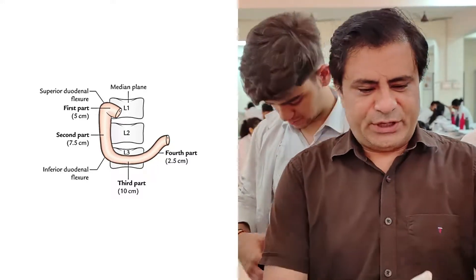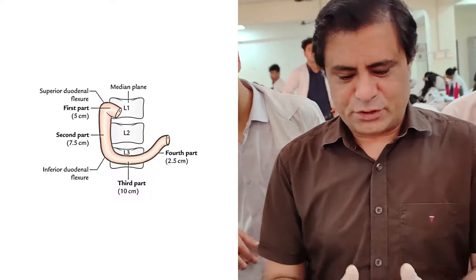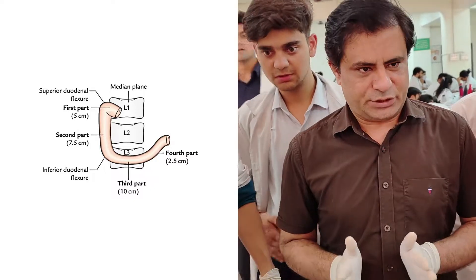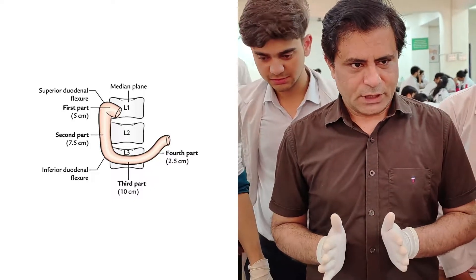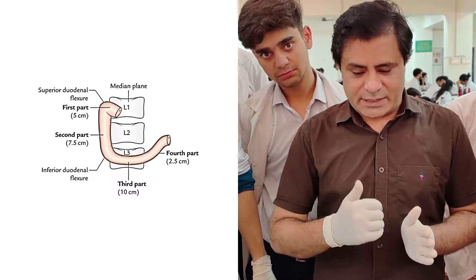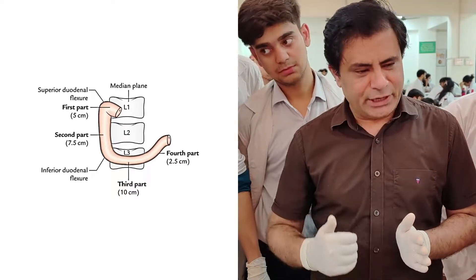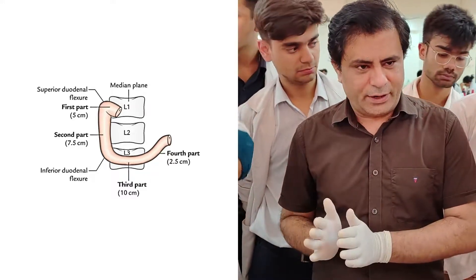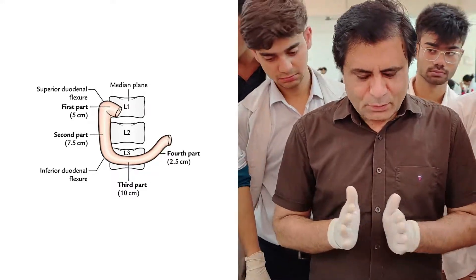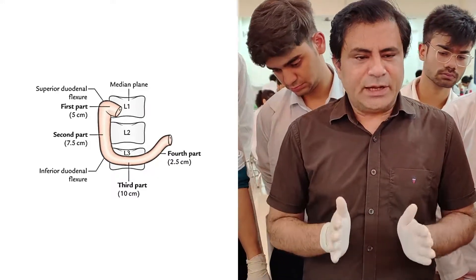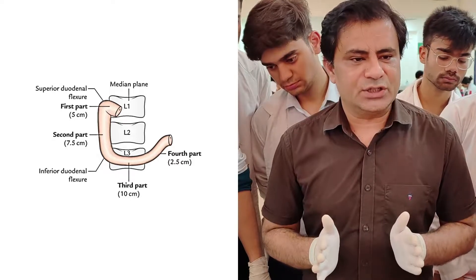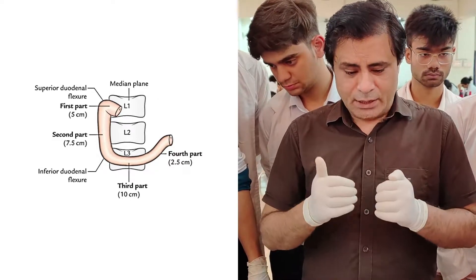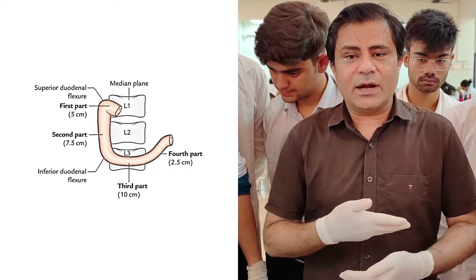Now regarding its location — on the surface, it is nearly a midline structure. Because it has four parts and the C-shaped loop means the second part is more to the right, it is somewhat on the right side, but overall it is nearly a midline structure. Now let's discuss its vertebral level.